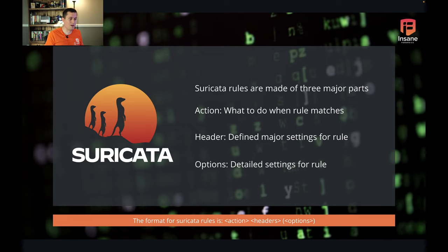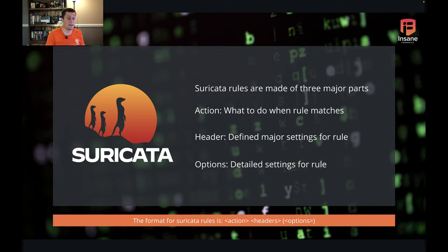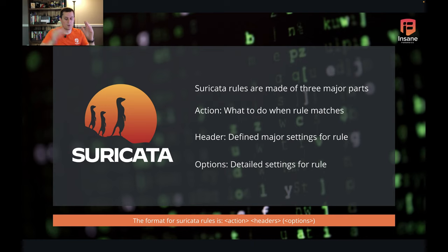Suricata rules have three major parts. There's the action that defines what happens when the rule actually matches. There's the header part which defines the major sections of the rules. And then there's the options which allow you to refine the behavior of the rule further down to match very specific traffic. The format is: action first, headers next, and options in parentheses next.